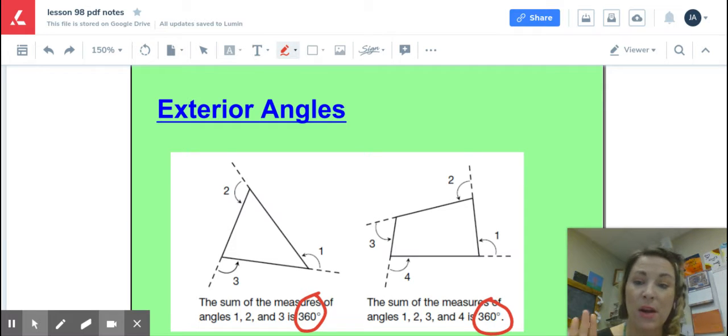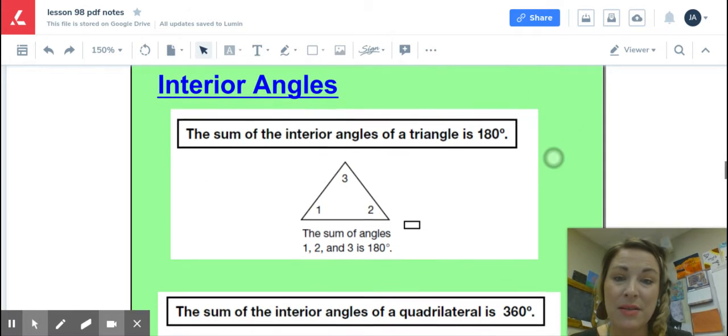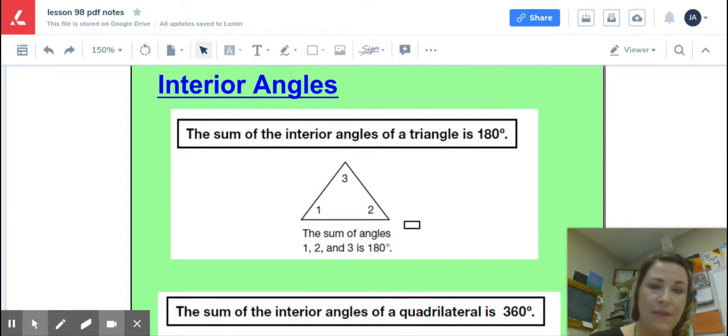Either shape, either one, either triangle or quadrilateral, 360 degrees will be the sum of the measures of those exterior angles. Moving forward, let's talk a little bit about interior angles.